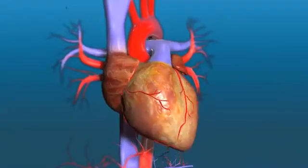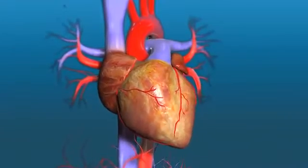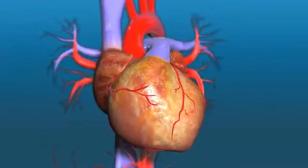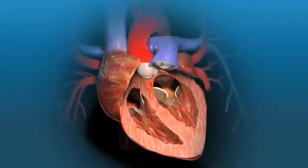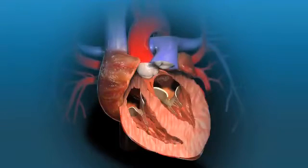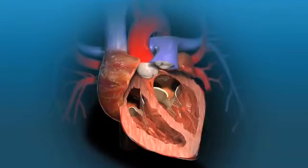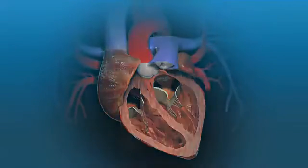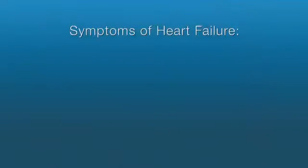After a period of time, a faulty aortic valve can cause the heart muscles to become enlarged and weakened. Depending on the nature of the valve's defect, the walls of the left ventricle may become abnormally thick or thin, and the problem can eventually affect the right side of the heart as well. Patients with this condition, known as heart failure,